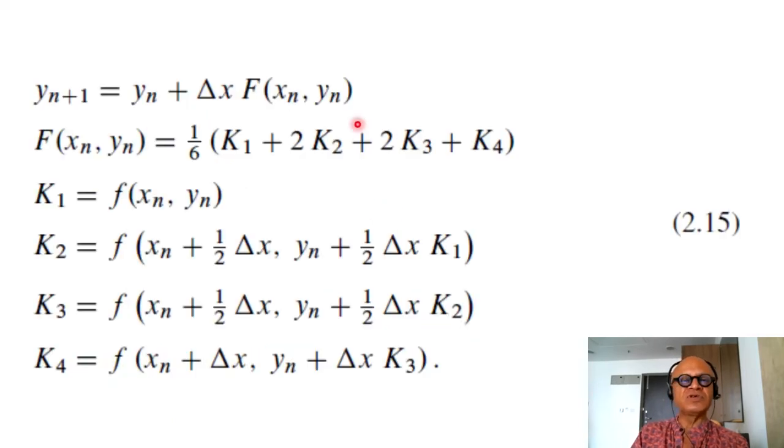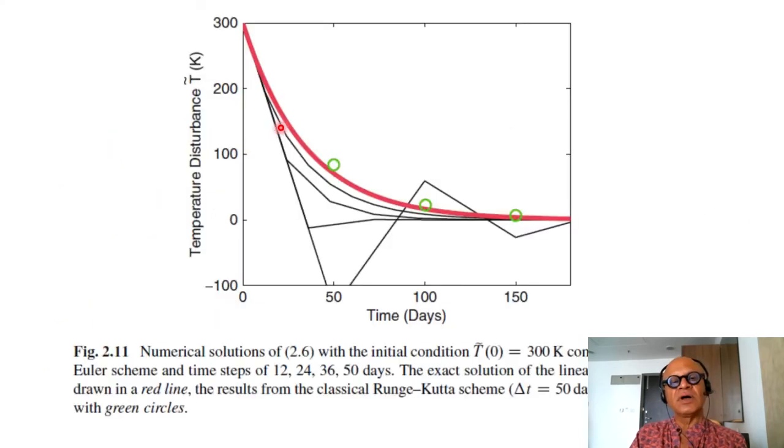So when we do this high order accuracy scheme, because we know the function, you get very good solutions here, but here time step is used 50 days. So what does this tell you?